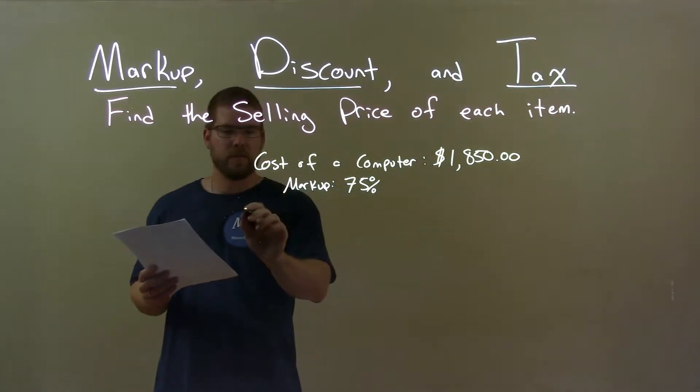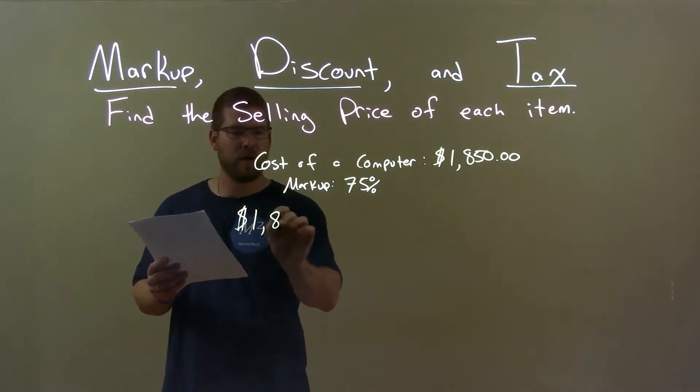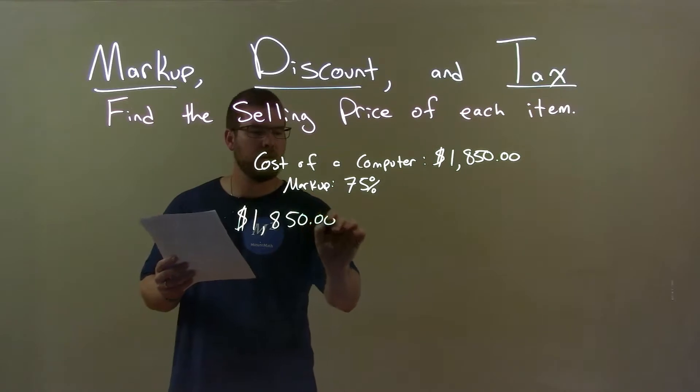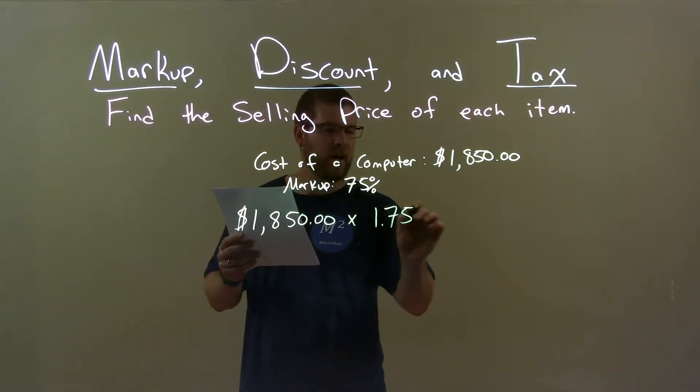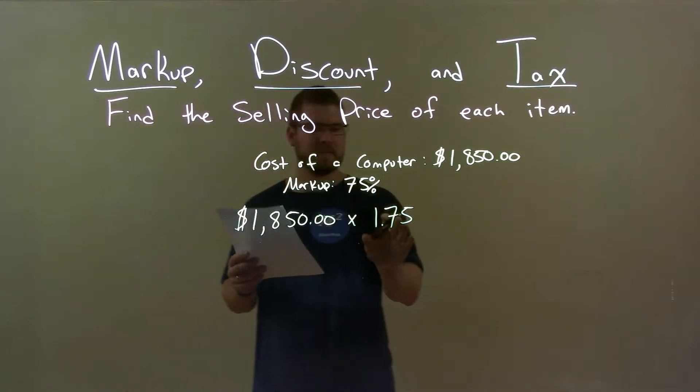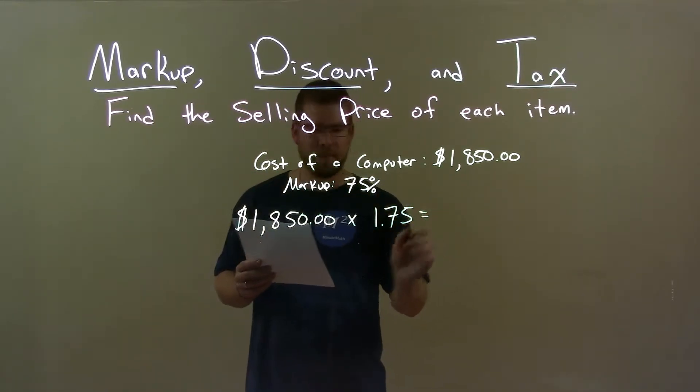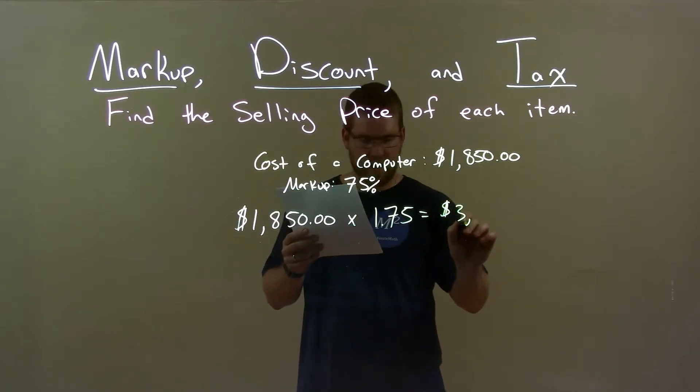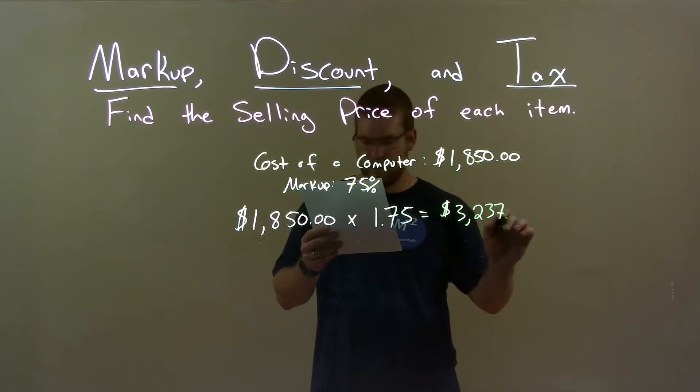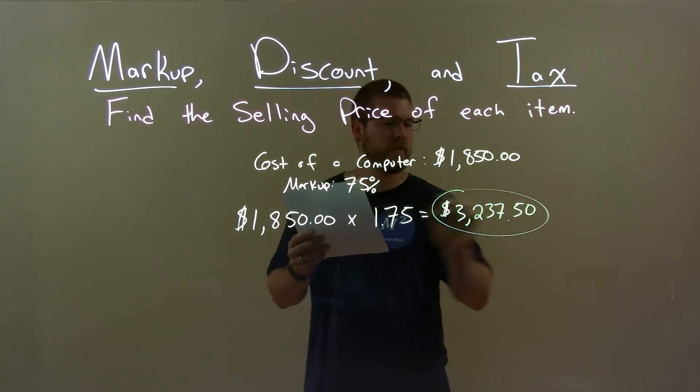first we start with the cost of the computer, $1,850, and we multiply that by 1.75. That constitutes or matches the 75% markup, okay? That gives us a final answer of $3,237.50 as our final answer.